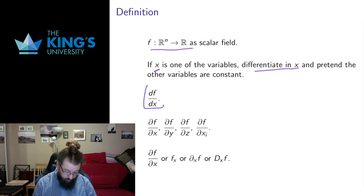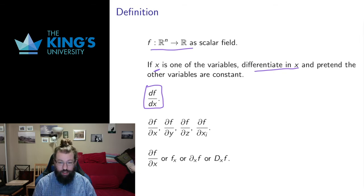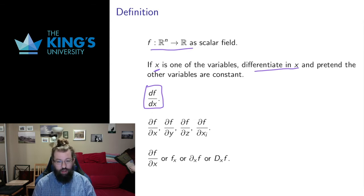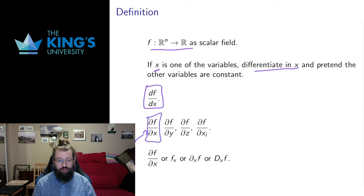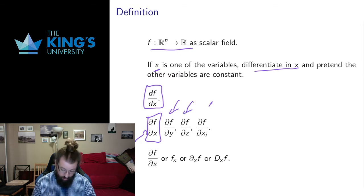The single variable derivative notation, at least using Leibniz notation, is df over dx. The partial derivative notation comes from this, but to make it clear that this is not a simple derivative but instead a partial derivative, we use this stylized d, which I'm going to call del. I'm going to read this as del f del x, which is the partial derivative in x. Likewise, this is the partial derivative in y, in z, and in some variable xi.